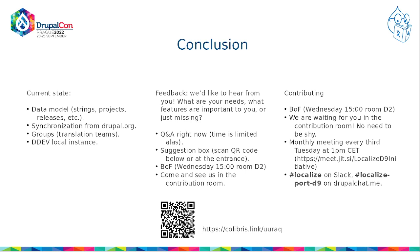One last question: is there a vision for why we need to change the data model? It looks like it's been working for all these years. The first thing is that Drupal 7 is end-of-life at some point and we need to upgrade to Drupal 9. We are currently implementing the current state as-is, but surely we want to improve it someday. Thank you for joining us today — if you have any more questions, go to the meetings or speak to us privately.